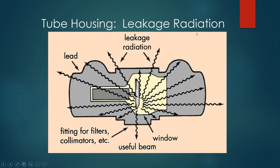Due to the two types of interactions — bremsstrahlung and characteristic interactions — inside the x-ray tube, the majority of interactions create heat. Approximately 99% of the energy converted from kinetic into electromagnetic at the tungsten target turns into heat and visible light — infrared radiation and visible light in the visible spectrum. We don't really care about any of that; we just don't want it coming out of the tube.